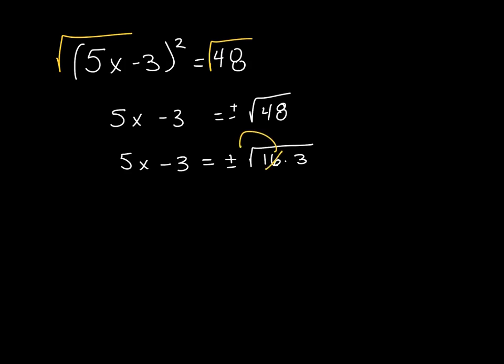The square root of 16 comes out as a 4, and remember, that number, any number that comes out of the radical always goes in between the plus and minus and the square root symbol. It's really important you put it there. Now, I have 5x minus 3 is equal to plus or minus 4 square root of 3.